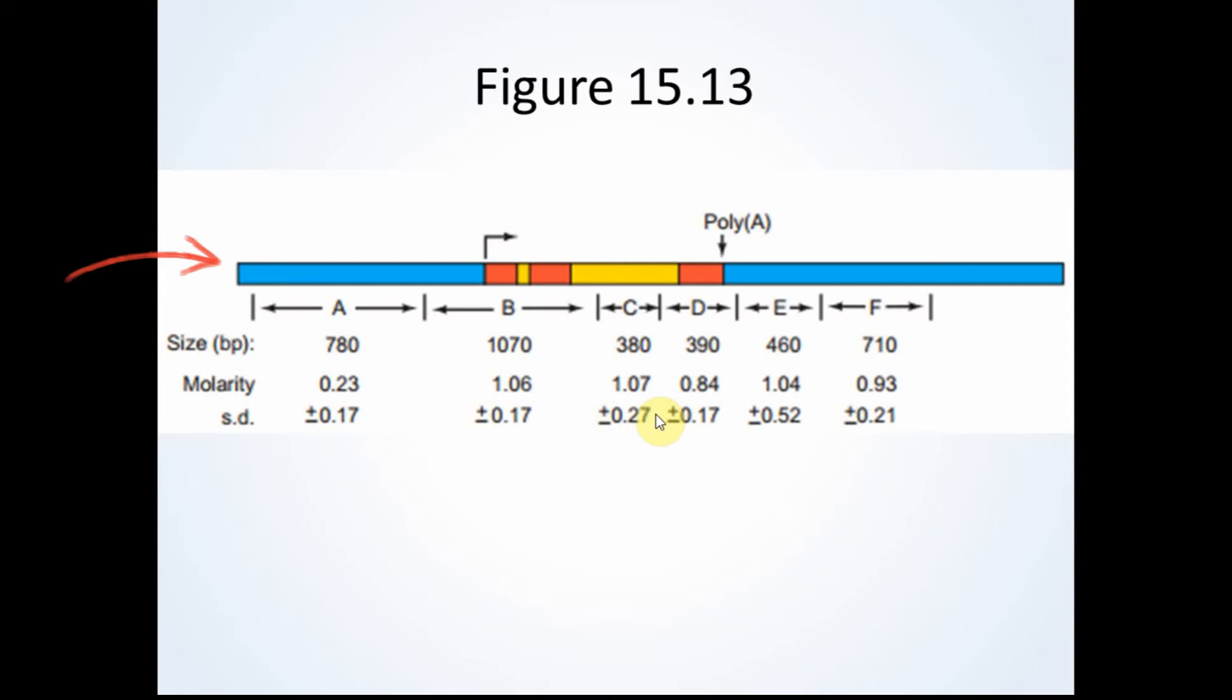The top part of the figure is a physical map of the DNA. The polyadenylation site is labeled. The red represents exons, and the yellow represents introns. The sizes and location of the DNA fragments A through F are shown below this map. Below these sizes, the molarities of RNA hybridization to each fragment are shown along with their standard deviations. The first exon shows where transcription begins, and these scientists were trying to discover where this transcription stops, which can be done by analyzing the molarities of hybridization.